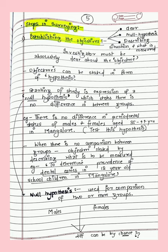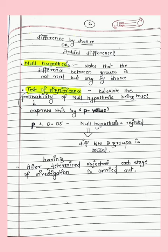The null hypothesis is used for comparison of two or more groups — say males and females — and we check their periodontal status to see if any observed difference is real or by chance. The null hypothesis states the difference between two groups is not real; it is just a chance occurrence. We calculate this using tests of significance, which calculate the probability of the null hypothesis being true, expressed as the p-value. If p is less than 0.05, the null hypothesis is rejected, meaning the difference between the two groups is actual.